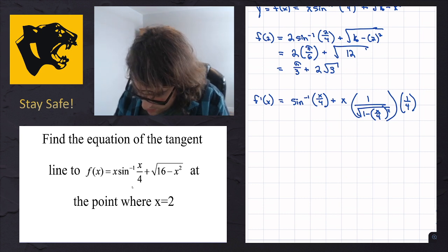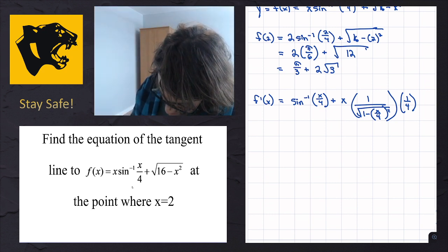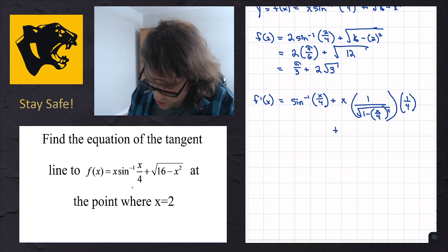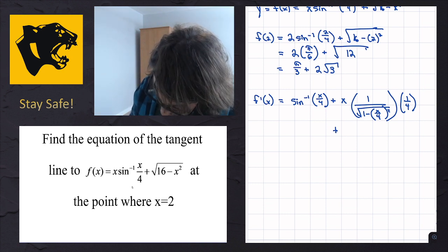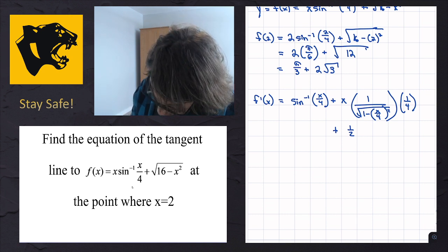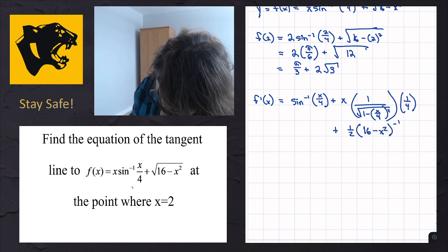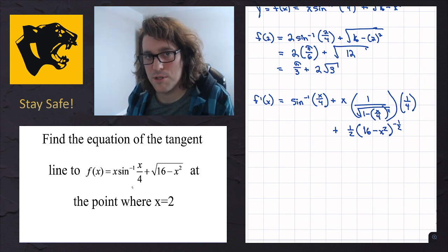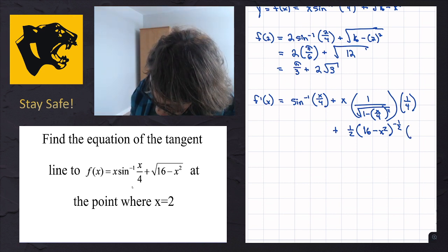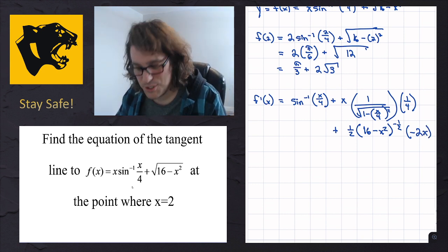Next, we handle the square root part of the derivative. I'll drop it below since I'm running out of room. The square root is the same as a 1/2 power around everything inside. So the 1/2 comes down, we leave the inside alone, raise it to the minus 1/2 power — because with the power rule we subtract 1 from the exponent — and then multiply by the derivative of the inside, which is negative 2x.